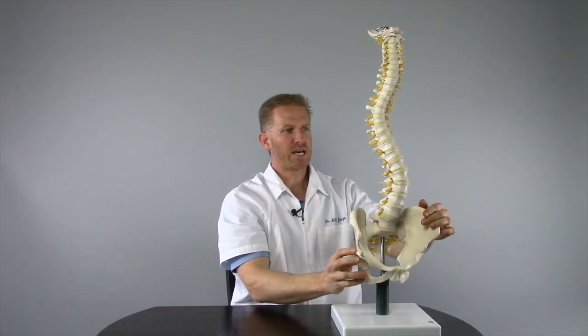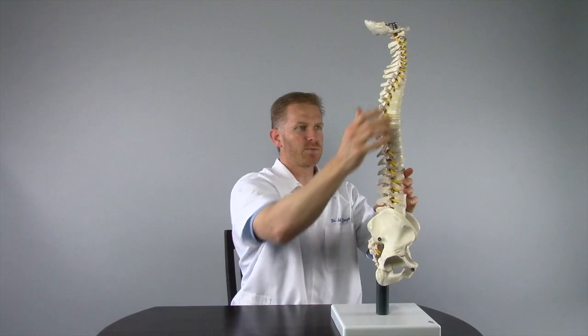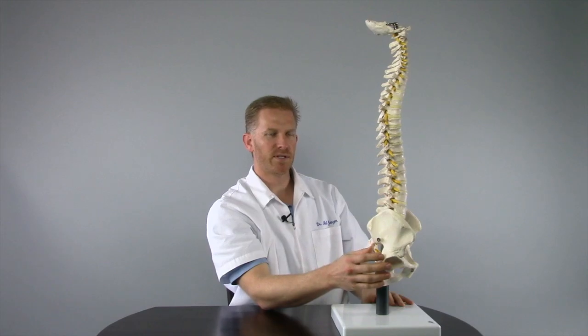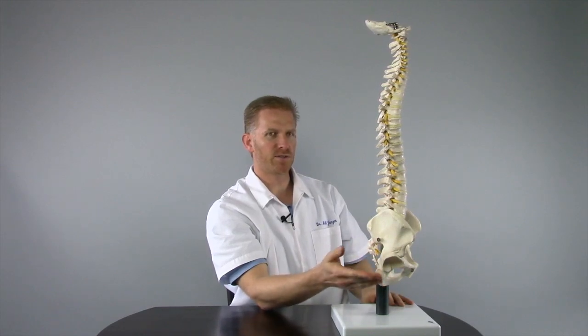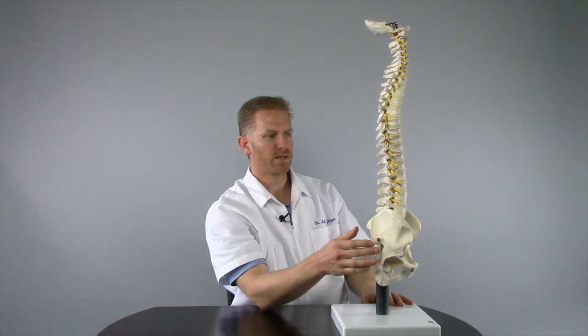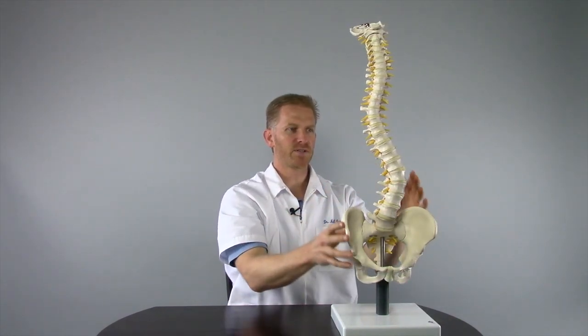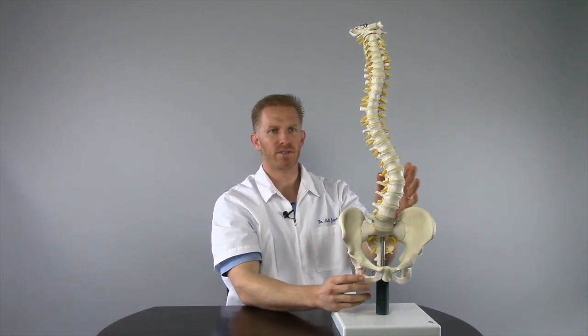From the sagittal plane, a scoliosis will often have lost its normal sagittal curves and appear much straighter. So there's the three-dimensional torsional deformity: you have the bend, the twist, a gain of curvature in the coronal plane and a loss of curvature in the sagittal plane. And that is a classic four-curve pattern scoliosis.